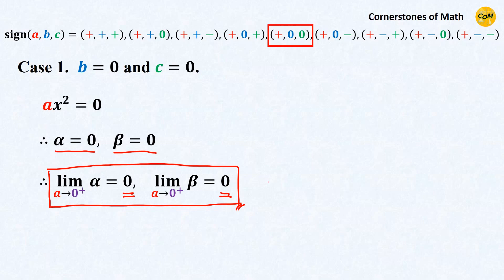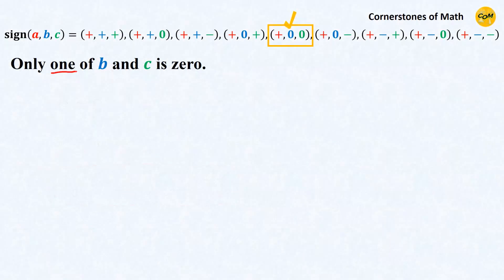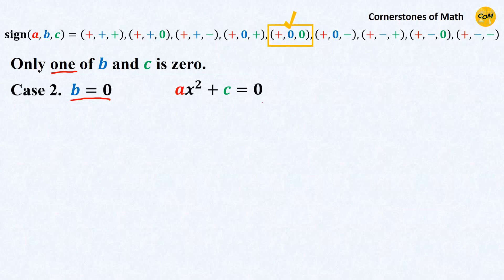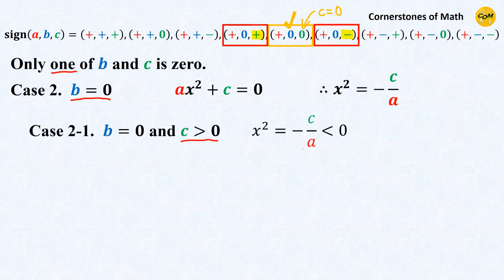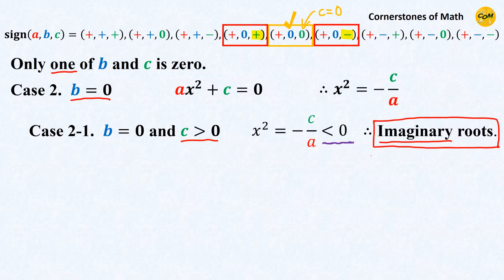Now let's move on to the slightly more complicated but still simple cases where only one of the coefficients b and c is 0. Starting with the case where b equals 0, the equation becomes ax squared plus c equals 0, hence x squared equals minus c over a. We have already dealt with c equals 0, so the remaining cases are c positive and c negative. When c is positive, x squared is negative, so both roots are imaginary, and since we don't deal with complex limits here, we just move on.